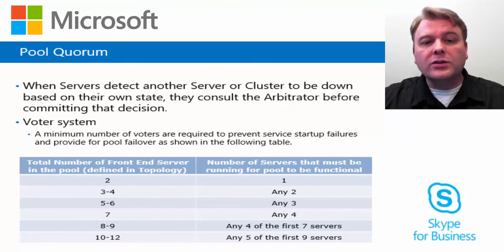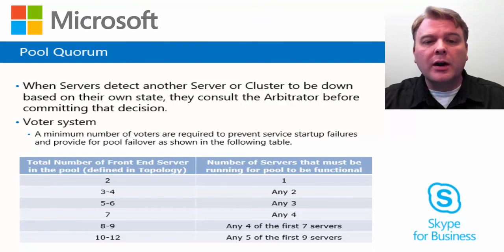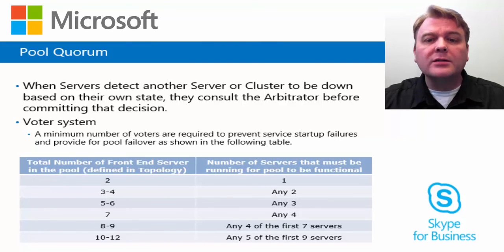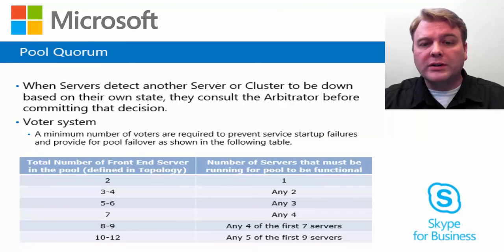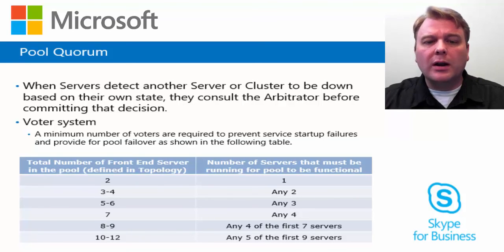If servers are added to or removed from the pool configuration in Topology Builder and then published successfully, the existing front-end servers must be restarted. The recommendation is to restart the servers one at a time. In the unlikely event that the entire pool was offline when the configuration change occurred, you will need to run a cmdlet to reset the pool registrar state.